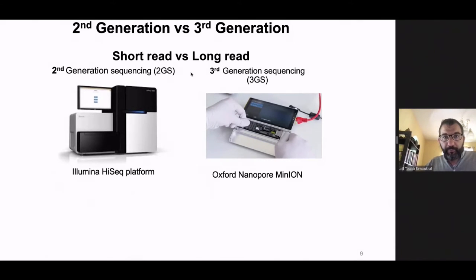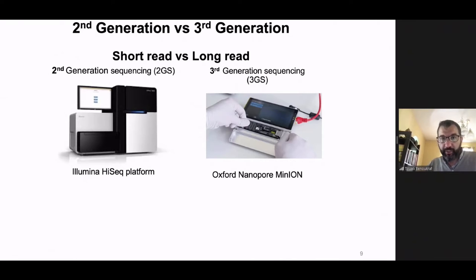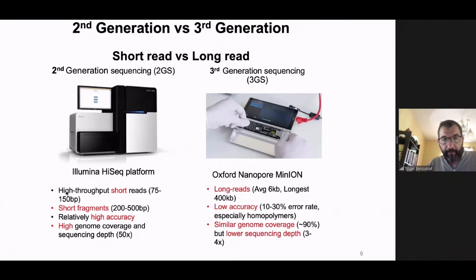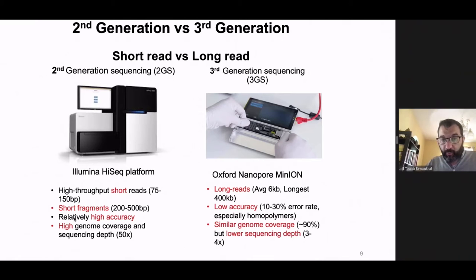The third generation sequencer also has some biases, and to date it cannot fully replace the second generation — we still need both. The second generation provides very high throughput with short fragments. Its big advantage is that it is the most accurate technology available and is very high throughput at low cost.